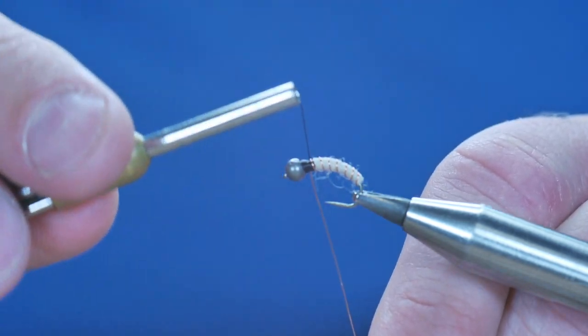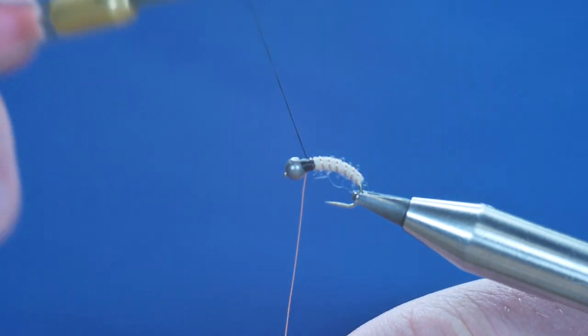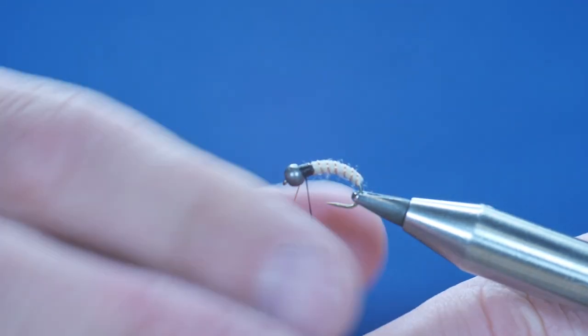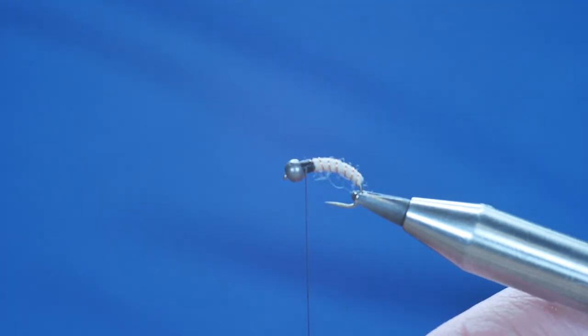So once you've got it to the black part, or your thorax area, should I say, just bring that over to lock it into place, then twist away your wire rib.